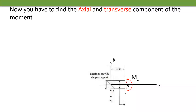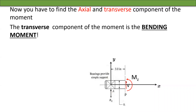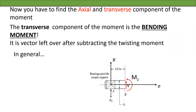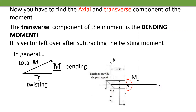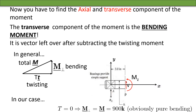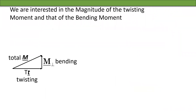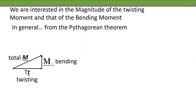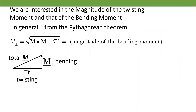To find the transverse (bending) component, we use the leftover from the axial component. The twisting and bending components are perpendicular to each other, so we use the Pythagorean theorem. The bending vector equals the total moment vector minus the torsion vector — in our case it's obviously 900k, pure bending. The magnitude of the bending moment is the square root of M·M minus T², which is 900 inch-pounds.